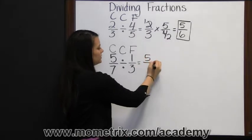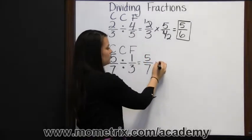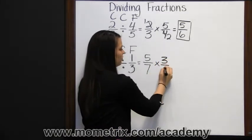So copy five-sevenths, change division to multiplication, and flip one-third to three over one.